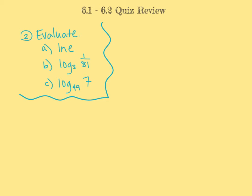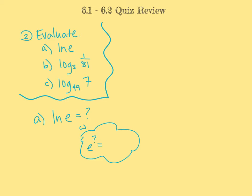In problem 2, we want to evaluate each logarithm. In part A, we have the natural log of e, and we want to know what that equals. The base is e here, even though we don't see it. So we're thinking: e to the what gives us e? Well, e to the first will give us e. Therefore, our answer to part A is 1.